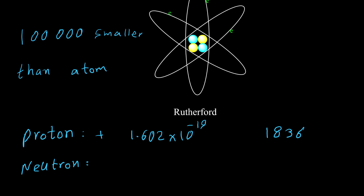There is also another particle: the neutron. But for the chemistry part, we need only these three particles — electrons, protons, and neutrons.